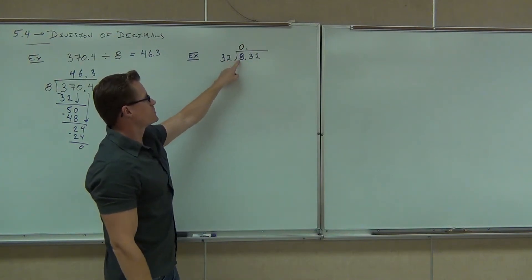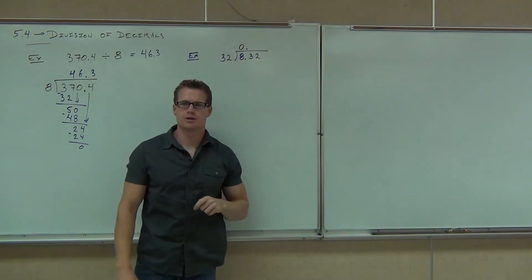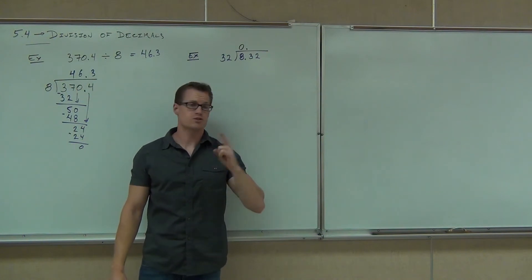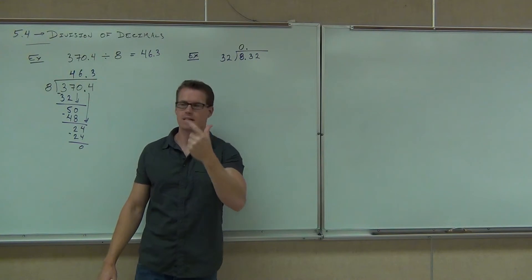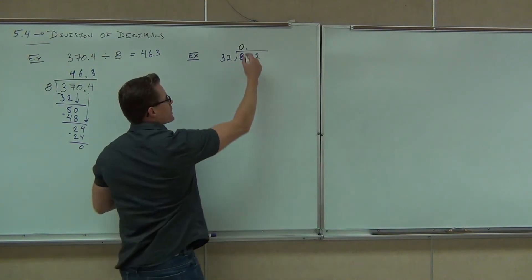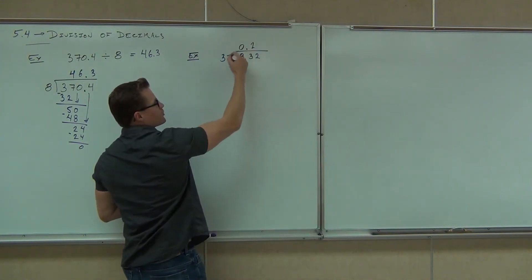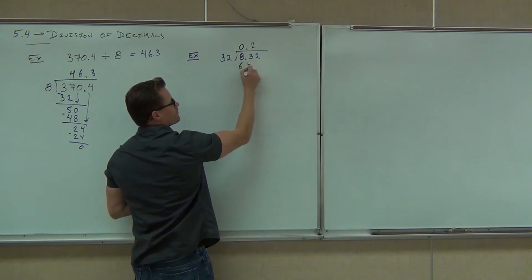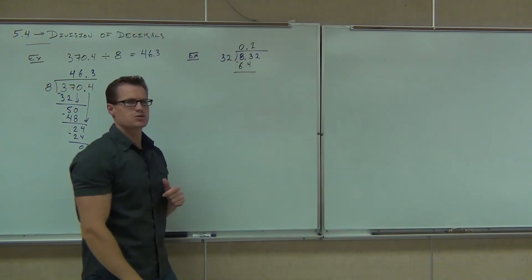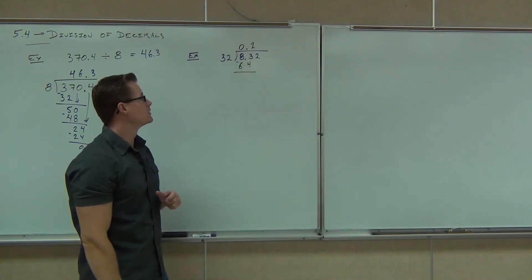How about 32 into 83? How much is that going to be? Twice. You can estimate, right? Use 30 if you'd like to. 30, 60, not too much. So 60, that's two times. And then we'll multiply and we'll get 64. Of course, if we subtract, how much do we get there? 19.